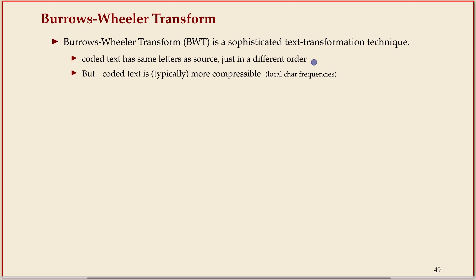The key property is it takes the text and permutes the letters in a very specific way. It turns out the outcome is more compressible in the sense we discussed in the section on move-to-front. Specifically, it has locally low empirical entropy. If the input text has some structure — for example, English text — it has low higher-order empirical entropy, though we didn't talk about that in detail.